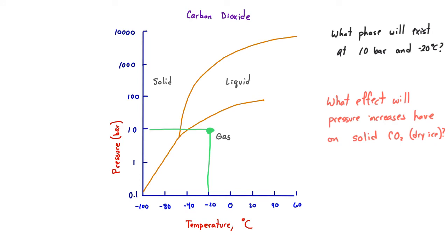Another question we could ask is what effect pressure increases will have on solid CO2 — in other words, dry ice. To answer that, we look at the direction of the phase boundary. We can see that the solid carbon dioxide phase boundary between solid and liquid shows that as we increase the pressure, the temperature at which it melts or sublimes into a gas gets greater. So changes in pressure are going to result in melting or sublimation of solid CO2.